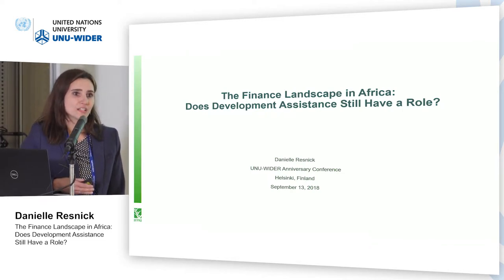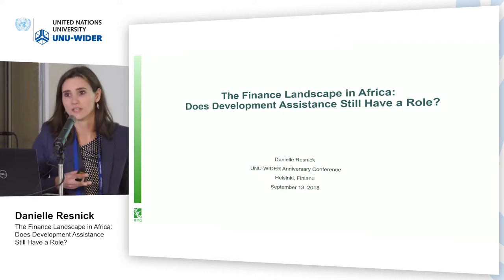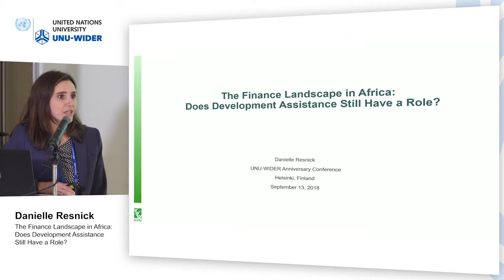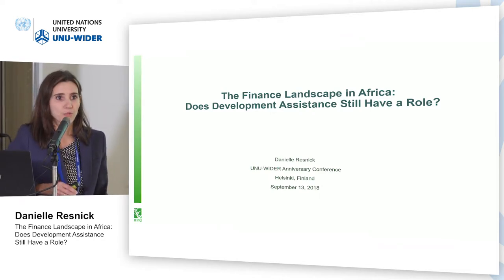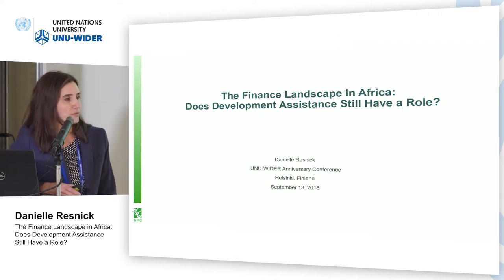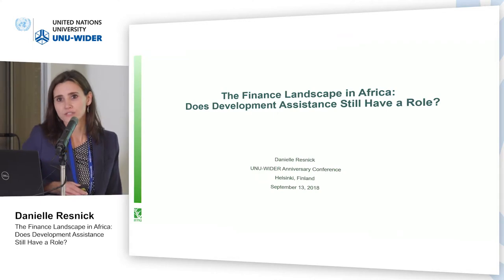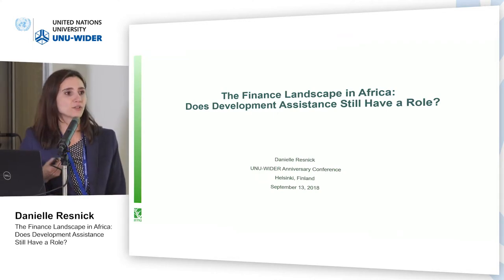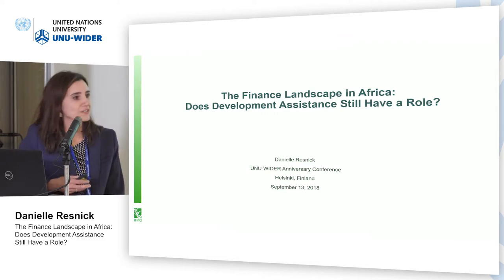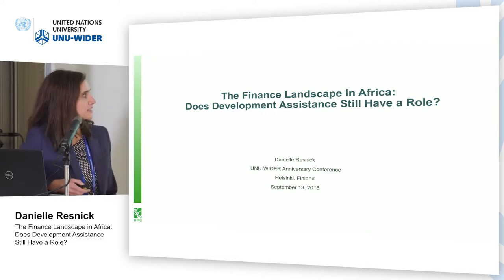First, to understand how the finance landscape has changed in Africa over the last decade or so. Secondly, briefly, why that might be — more from the recipient side. I think we know a little bit from the donor side why things have changed, but what about on the recipient side? And then lastly, what does this mean for traditional development assistance? Is there still a role that traditional DAC donors can be playing in development assistance in Africa?